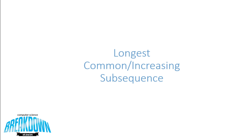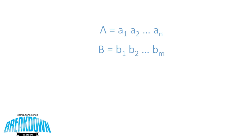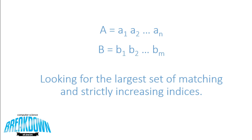When we're considering the longest common subsequence problem, the first thing I want to share is just how similar it is to the edit distance problem. The key difference is that in the edit distance problem we were transforming string A to string B, but now we're not transforming any strings. Instead, we consider two strings A of length N and B of length M, and we're looking for the largest set of matching and strictly increasing indices — anywhere in A and B where A at index I and B at index I are equal can be in the set, and we're trying to find the largest such set.